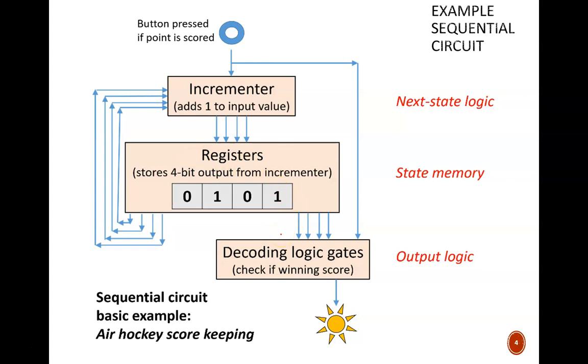That will be determined by this output decoder. Let's say that six points are needed to win the game. Currently, five points show in the register, so we are near the end. The moment the next goal is scored, this decoder sends an active signal, which would turn on the siren and flashing lights to let you know that you won, or your opponent won.